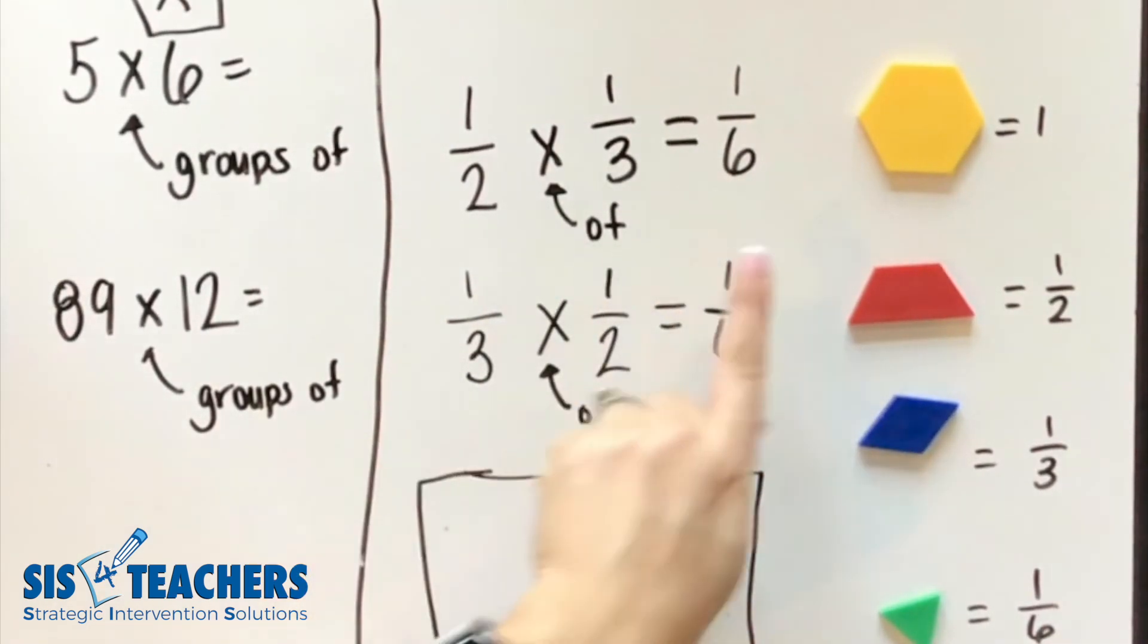But if you don't understand why the answer is one sixth and you can't prove it with manipulatives, we need you to work more with manipulatives. This video can be used in your classroom to demonstrate as a lesson launch as you start to learn about fractions times a fraction. You can also use it in a flipped classroom fashion where students watch the video prior to seeing you in a math station. This will help kids have better background knowledge as you start to instruct, and you can start your instruction right here.